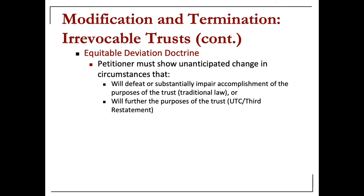The Equitable Deviation Doctrine holds that even if the trustee objects, if there are unforeseen circumstances that the settlor couldn't foresee — circumstances that defeat or substantially impair the ability to accomplish the purpose of the trust — then the court may allow for the modification of that trust, more so for administrative modifications.